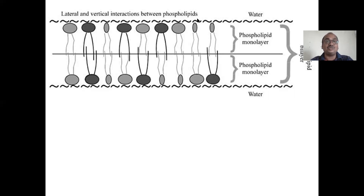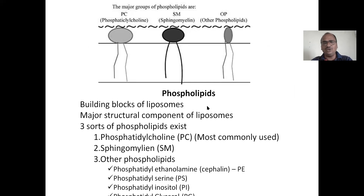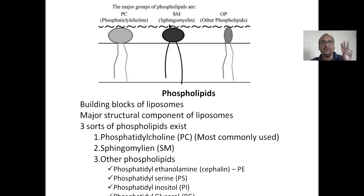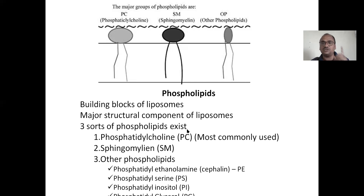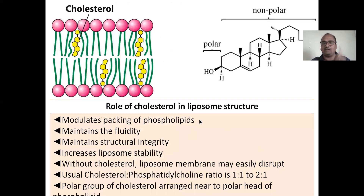The lateral and vertical interactions between phospholipids are very important structures you must write in your examinations. Phospholipids are just like a man — head and a body, head and tail. There are three major phospholipids that are the building blocks of liposomes: first, phosphatidylcholine (PC); second, sphingomyelin (SM) — just like the myelin sheath on a neuron; and other phospholipids including phosphatidylethanolamine (PE), serine, inositol, and glycerol. All these names and structures are very important for your examinations.